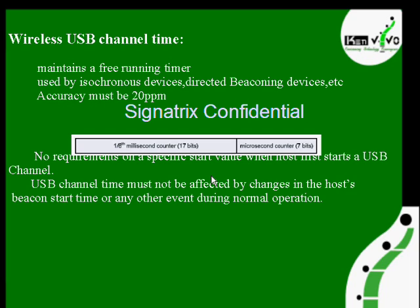This channel time information is mainly used by isochronous devices. An example of an isochronous device is listening to audio — real-time live programs — which come under isochronous transfer. There are no requirements on a specific start value; when the host starts, the USB channel time must not be affected by changes in the host beacon start time. This USB channel time will come in the MMC between each super frame. At the start of each super frame, we will have a beacon, and there is also a beacon start timer.